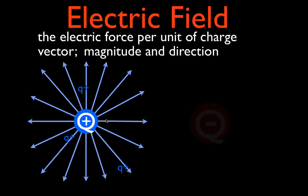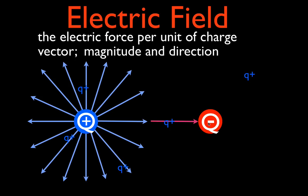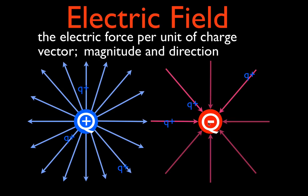Now let's see what it would look like around a negative charge. We do the same thing — we take out our test charge, which is still very small and still positive. Because it's positive and this charge is negative, the direction of the force on the test charge is going to be toward the main charge. Trying it in different positions — still towards the negative charge. Anywhere around a negatively charged particle, the electric field points towards the charge. Positive charge: field points away. Negative charge: field points towards, or from positive to negative. That's how you determine the direction of the electric field.